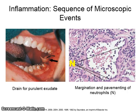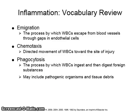One figure shows a drain being placed to allow purulent exudate to leave the tissue. The microscopic image shows margination and pavementing of neutrophils in a blood vessel. Emigration is the process by which white blood cells escape from blood vessels through gaps in endothelial cells. Chemotaxis is the directed movement of white blood cells toward the site of injury. Phagocytosis is the process by which white blood cells ingest and then digest foreign substances, including pathogenic organisms as well as tissue debris.